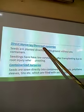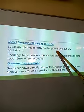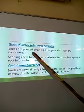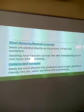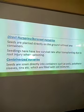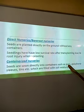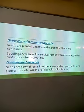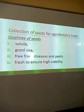Direct nurseries, also called bare root nurseries, are where seeds are planted directly on the ground without any containers — seeds are in direct contact with the soil. These have a disadvantage of a low survival rate after transplanting due to root injury during uprooting. Containerized nurseries mean seeds are sown into containers such as pots, polythene sleeves, or tins with a rooting medium like soil, and are usually the best.